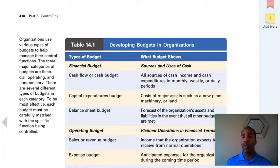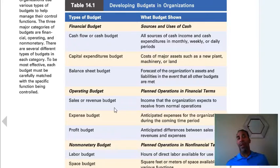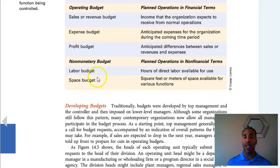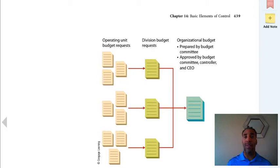Different types of budgets: financial budget, sources and uses of cash — cash flow, capital expenditures, balance sheet. Companies need cash on hand for certain things, like capital expenditures — a new plant, new machinery. Operating budget, sales or revenue budget — sales money coming in and the revenue budget for operations together make your total budget. Expense budget — how much you can spend on travel, things for employees. Profit budget, non-monetary budget — labor and space. You're on a budget for how many people you can hire and how much space you can use. Many different types of budgets — some people think there's just one type.